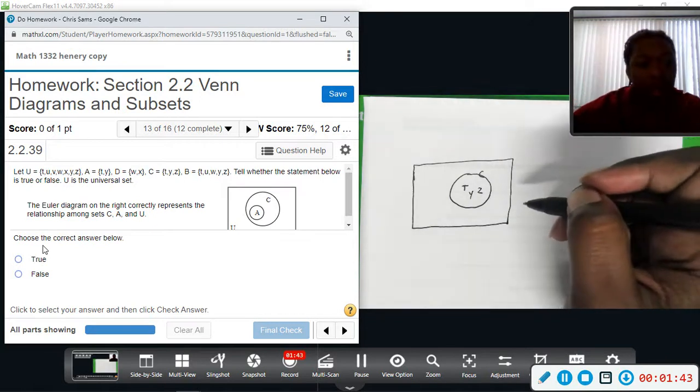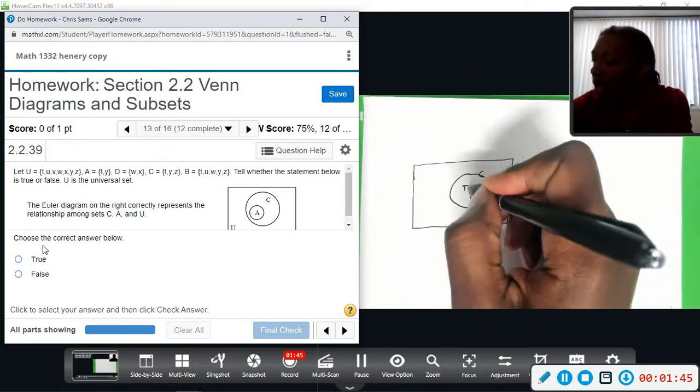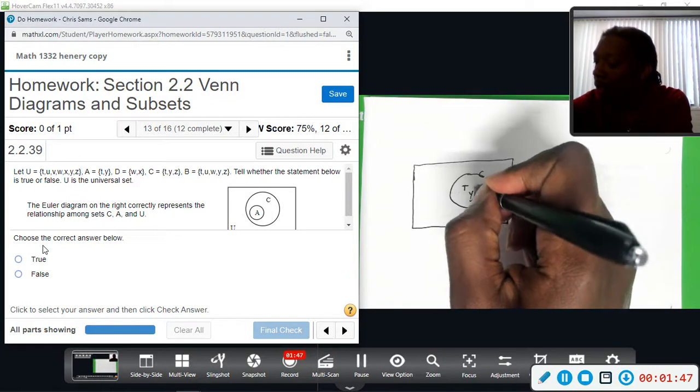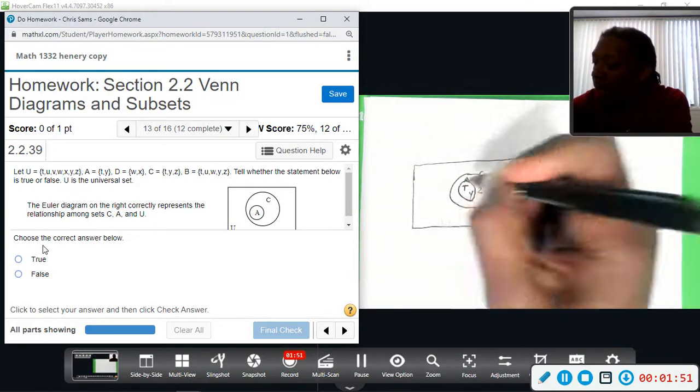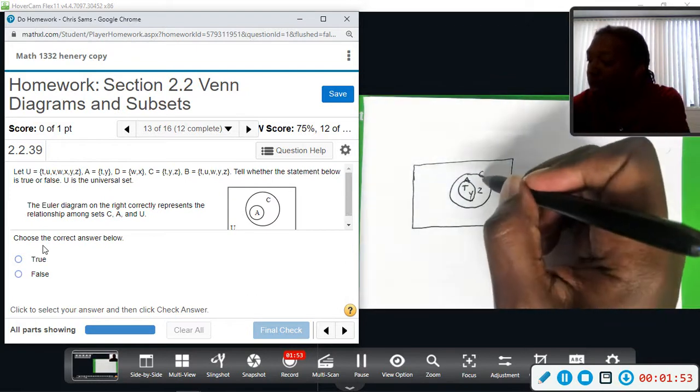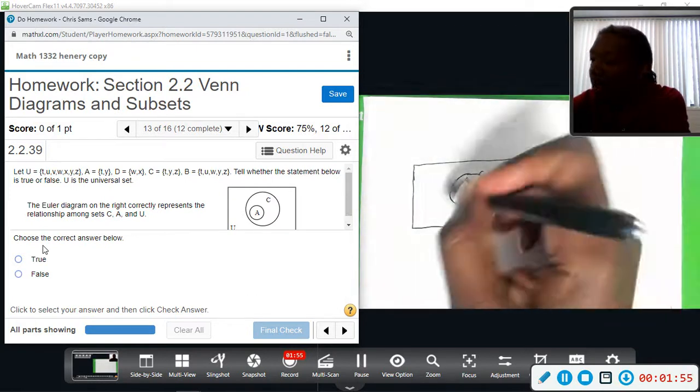And then it says the set A is completely contained in set C. Well, what is in A? t and y. Okay, t and y are also here. So if I just put a circle around t and y, this represents the set A. So according to this diagram, C is a bigger set than A.